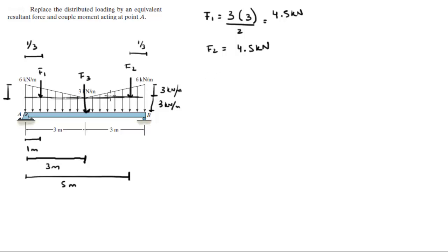You can calculate it or you can get into the habit of saving time by using a little bit of common sense. Now F3 is the area of the rectangle which has a height of 3 kN per meter times a length of 6 meters. The meters cancel out. 3 times 6 is 18 kN.